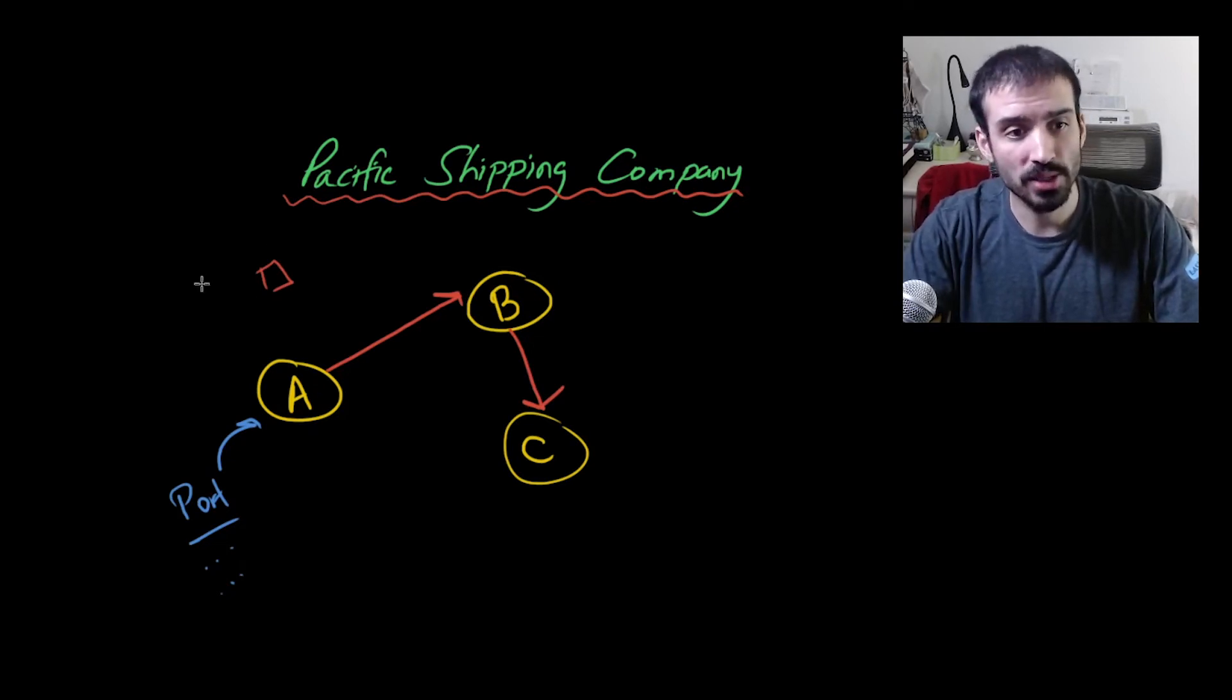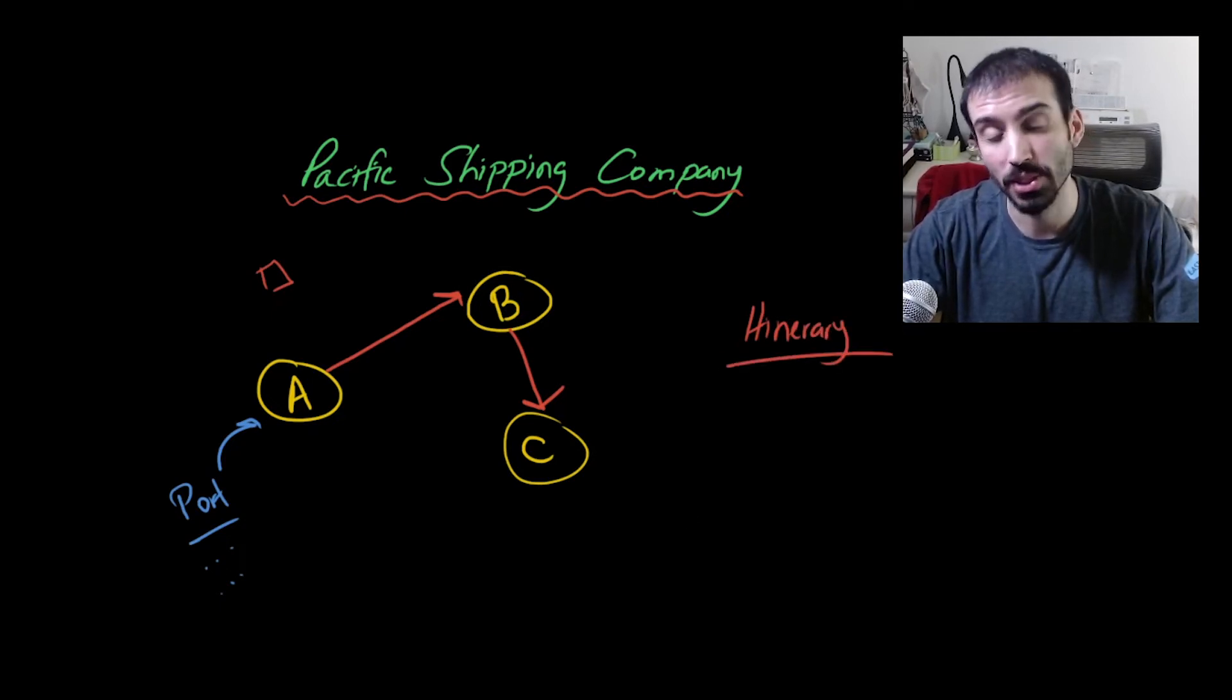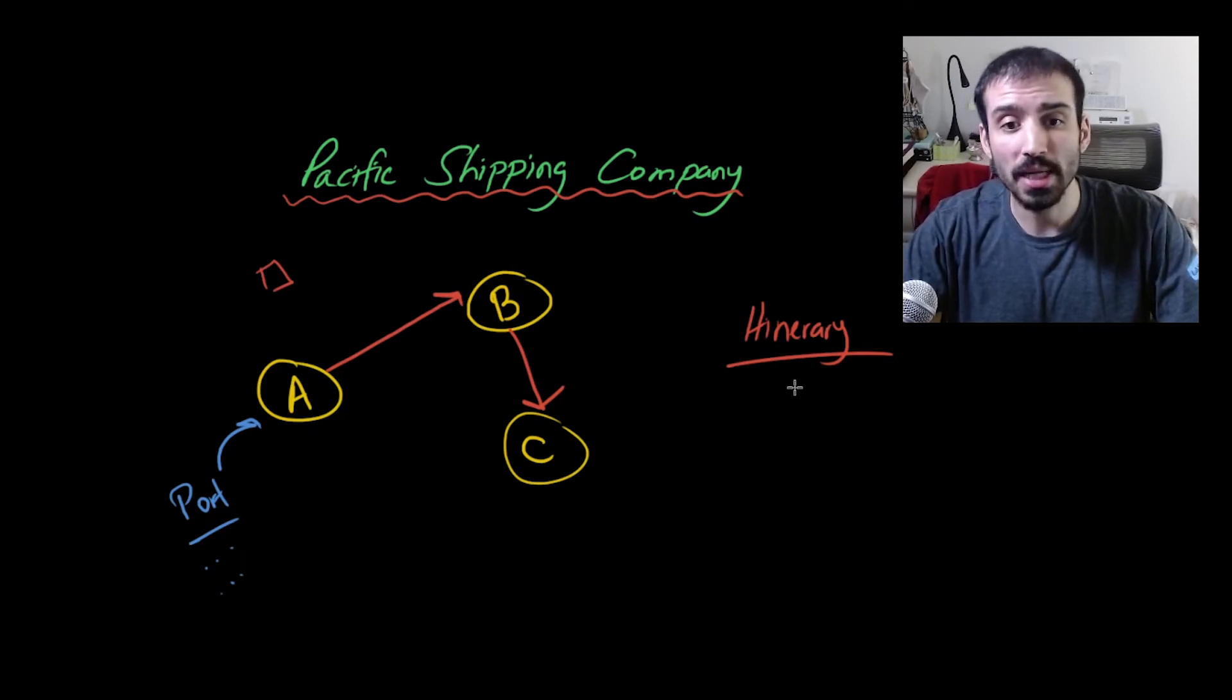Well, obviously we're going to need some concept of a vessel, but this concept here, what is this called? Well, you can call it maybe a route. I would say it's called an itinerary because a route is an expectation. An itinerary is what you will actually be doing. And each itinerary has a list of, what do they have? Stops, right?